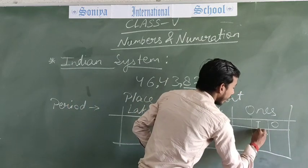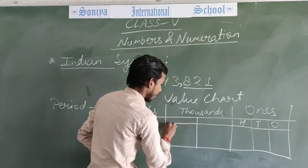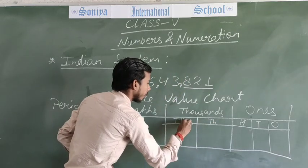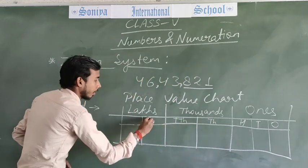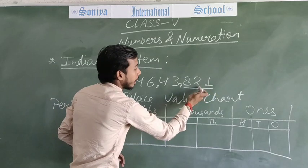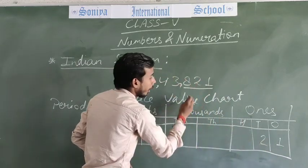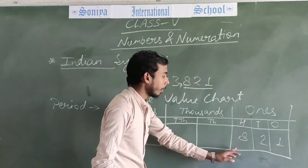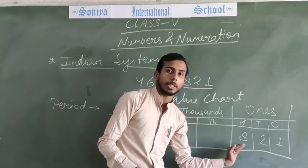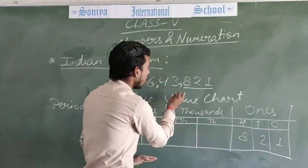The first period is the ones period, meaning eight hundred twenty-one is in the ones period. Ones period: ones place, tens place, hundreds place. So ones is 1, tens is 2, hundreds is 8. The ones period gives us eight hundred twenty-one — 821.